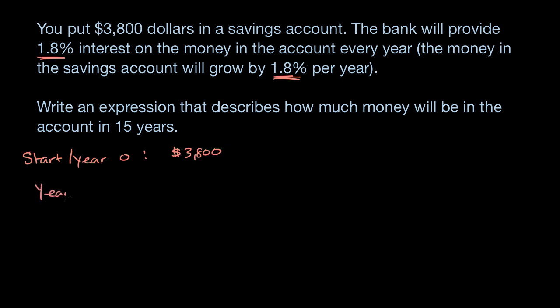Now let's think about year one. How much money will we have after one year? Well, we would have the original amount that we put, $3,800, and then we're going to get the amount that we get in interest. The bank will provide 1.8% interest on the money in the account, so it'll be plus 1.8% times $3,800.